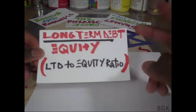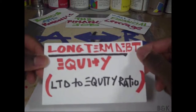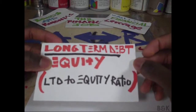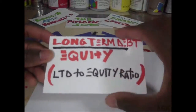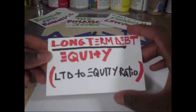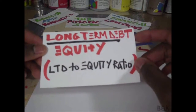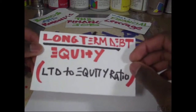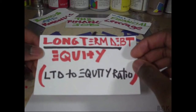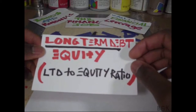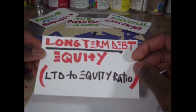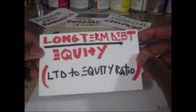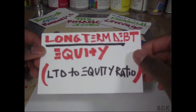This ratio I actually like a lot. With the long-term debt to total capitalization ratio we were really concerned with two things: our long-term debt — the amount of money we owe after a year — and the amount of money we actually own. The long-term debt to equity ratio is all about understanding the relationship between those two. We've already looked at total debt to total equity, the debt to asset ratio, and another ratio I don't really want to talk about anymore.